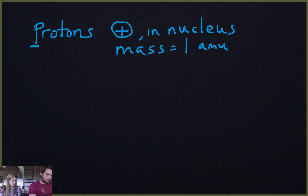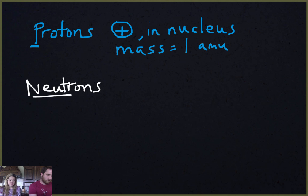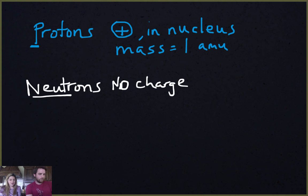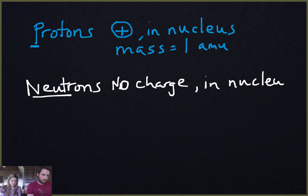Now let's do neutrons. Neutrons are neutral, which means no charge — we'll write a zero for no charge. Neutrons are also in the nucleus, and they also have a mass of one AMU.